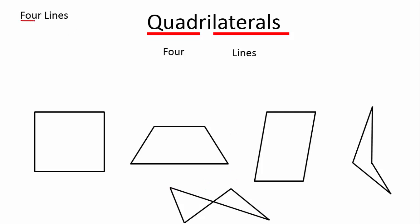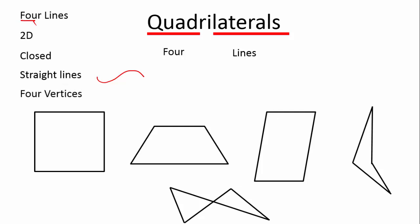It's got to have four lines. These are not separate lines. It's got to be 2D. It's got to be a closed shape. It's got to have straight lines — the lines can't be squiggly. It's got to have four vertices. Don't get too confused about this — these are four vertices.